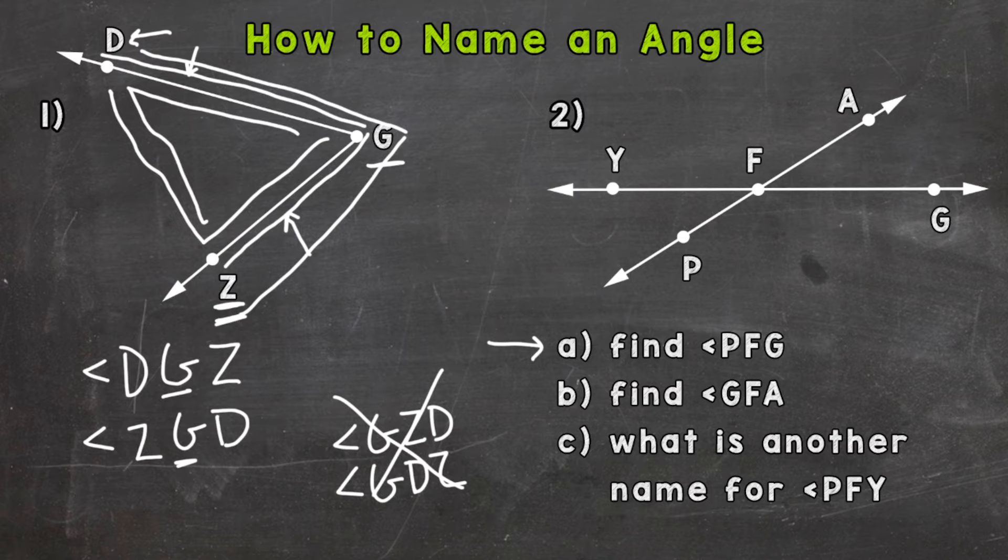So this tells us start at P, go to our vertex F, and end at point G here. So angle PFG would be right here: P, F, G. So our angle right here would be PFG.